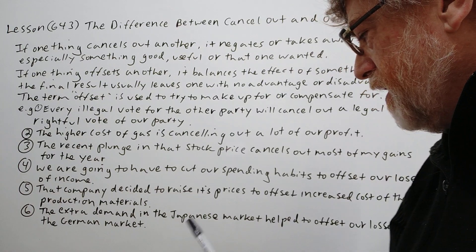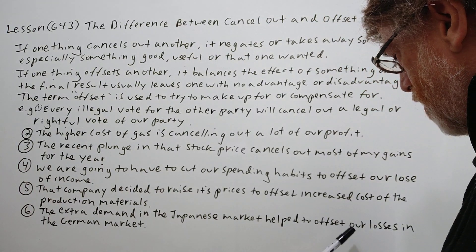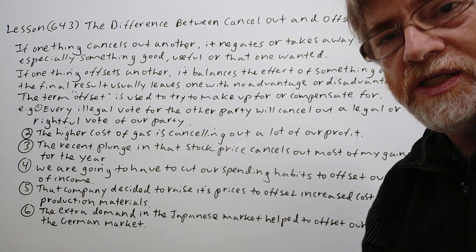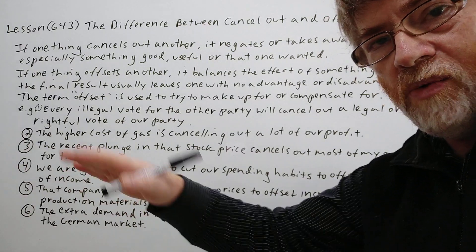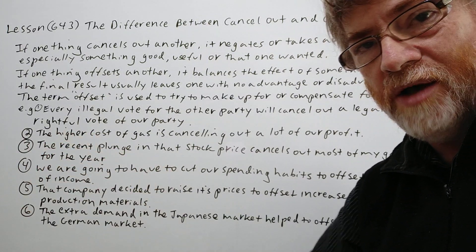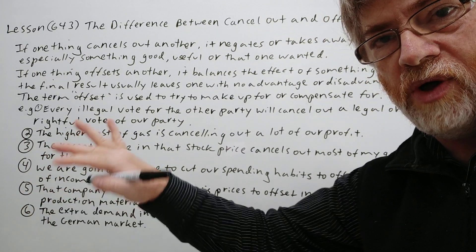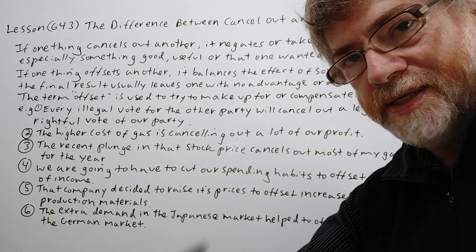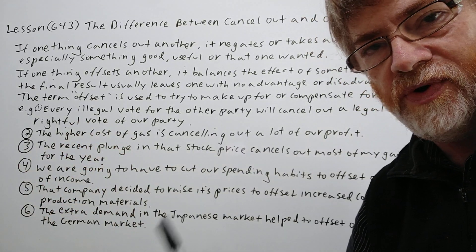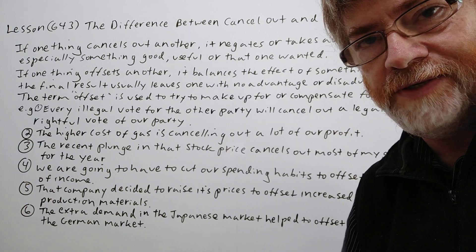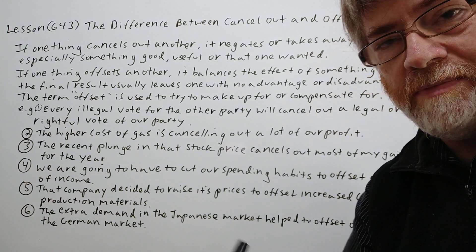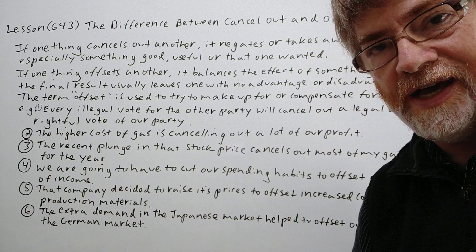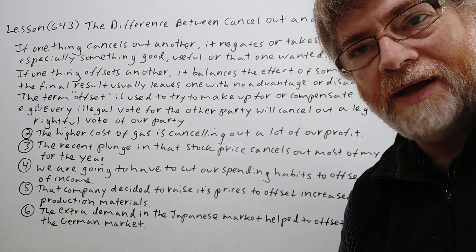Number six: the extra demand in the Japanese market helped to offset our losses in the German market. So maybe you're selling in two different markets — one market went down but the other went up, and it helped to make up for, to compensate for, the other losses. Anyway, I hope you got a better feel now for when you're more likely to use one than the other. Thank you for your time. Bye-bye.